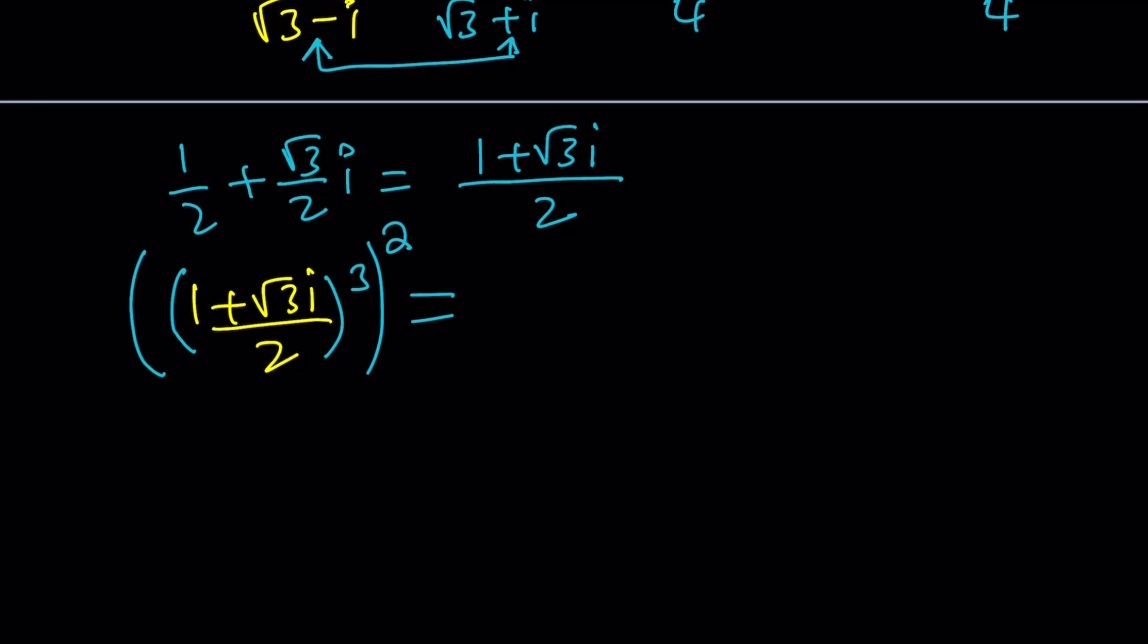Anyways to cube this expression you just need 1 minus 3 root 3i plus 3 root 3i. The formula, the identity that I almost always use. And then that is going to be divided by 2 cubed which is 8 and then we have to square this result.